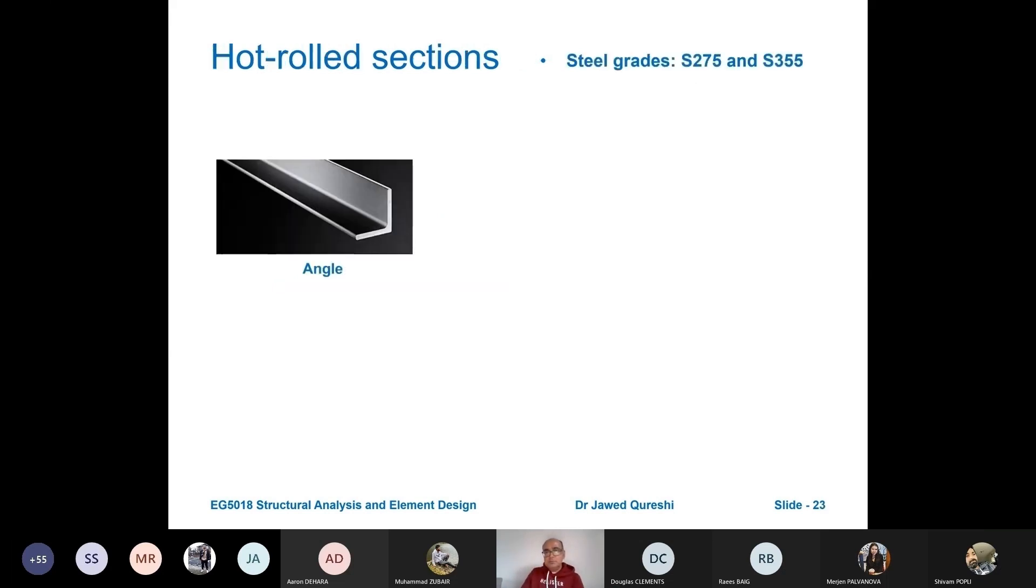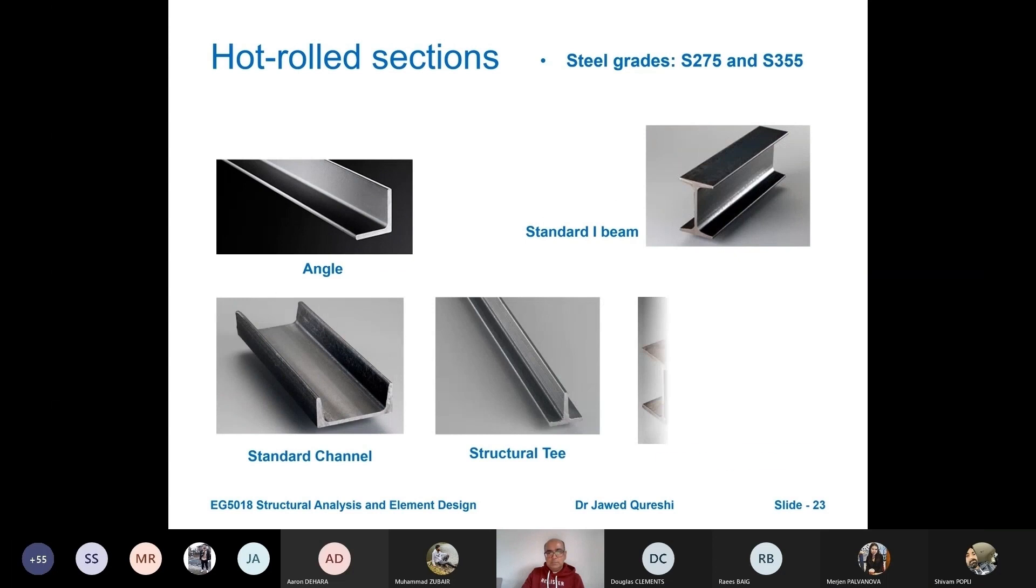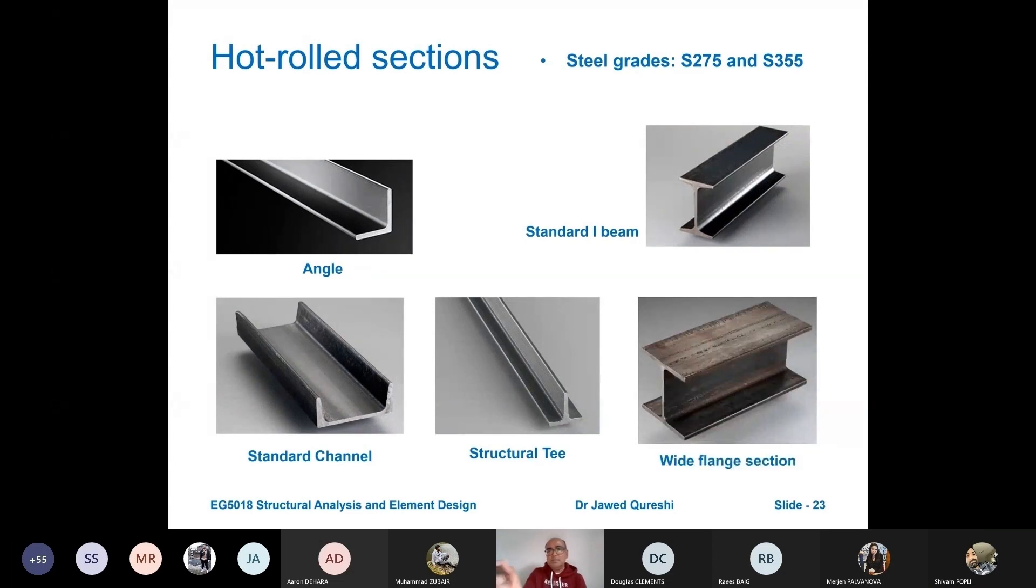The grades that we normally use for steel are S275 and S355 for these sections. What does it mean by 275 and 355? It means that yield Fy for these members is 275 and Fy for these members is 355. This is the stress in Newton per millimeter square.